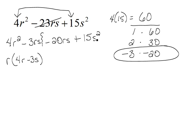Now remember we want to factor a common factor out of the last two terms and we want to end up with a 4r - 3s as our other factor. So what do I have to multiply to 4r to get -20rs? That would be a -5s.